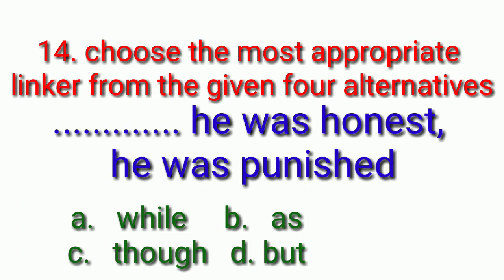Fourteenth question. Choose the most appropriate linker from the given four alternatives. Dash, he was honest, he was punished. Your options are while, as, though, but. Your countdown starts. Answer is though. Though he was honest, he was punished.